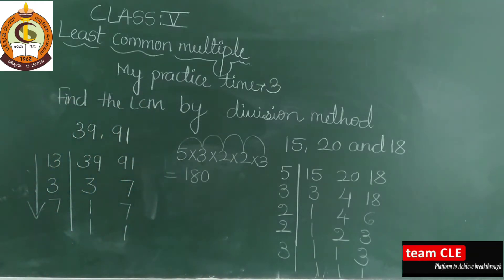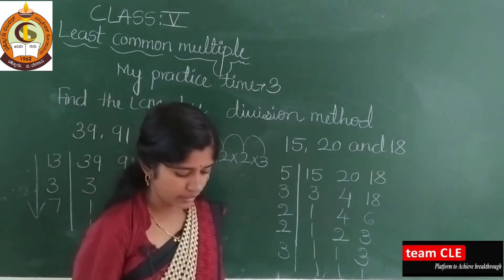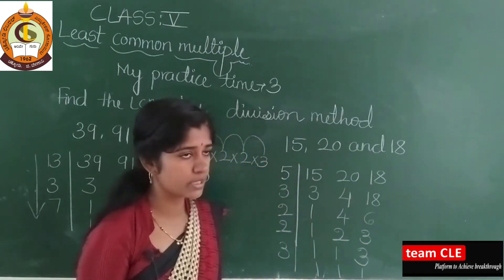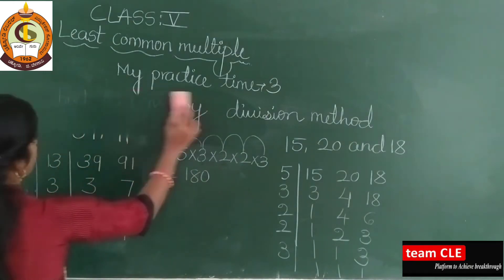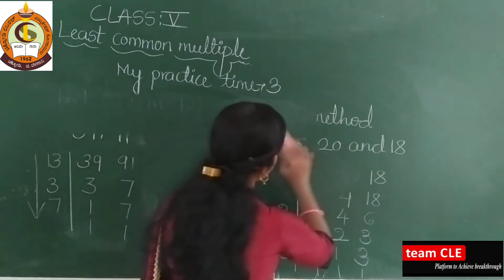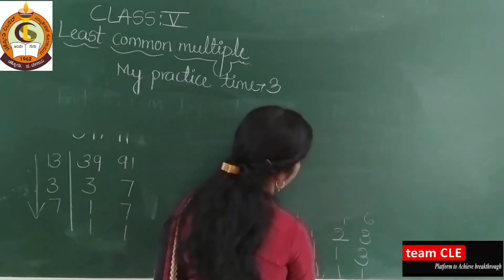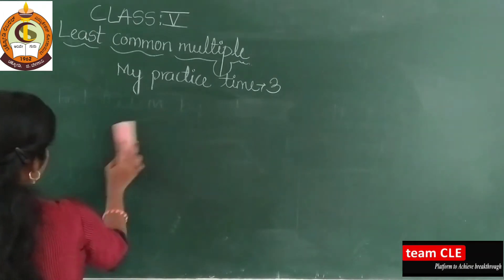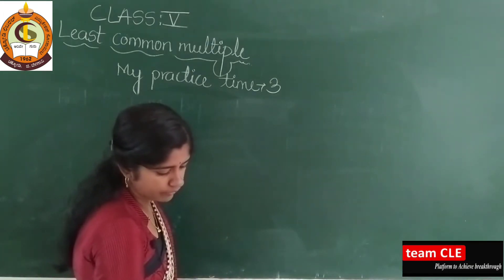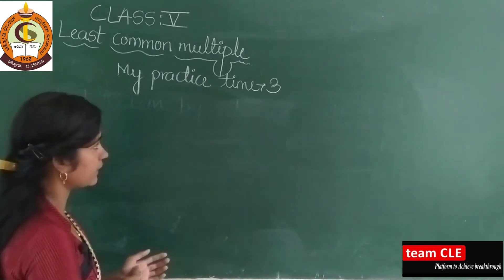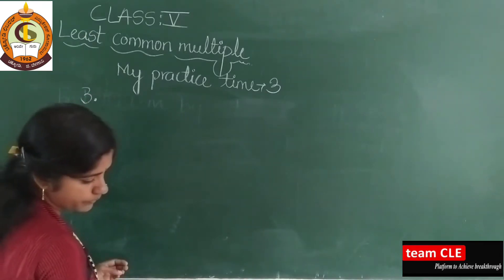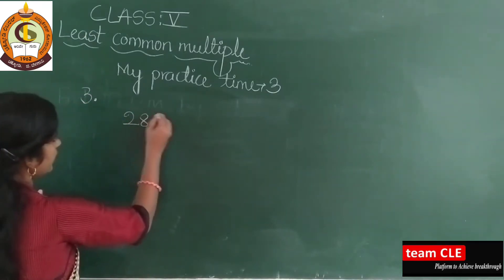We have one more method and that is the prime factorization method. See here, total 8 examples are there — among them I have solved 2 and the remaining 6 you do as homework. Next, I will take from My Practice Time 3. If you understood the division method, then you can solve the tree method also easily. The question is: find the LCM by using the prime factorization method — and I will take 28 and 48.